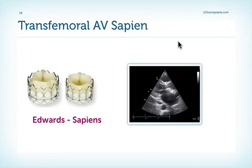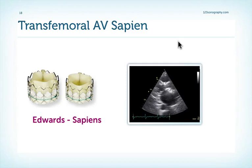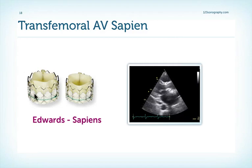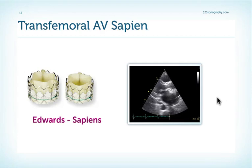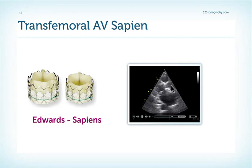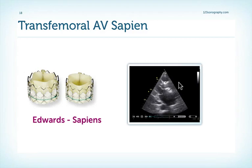The other type of valve currently being implanted via the transfemoral approach is the so-called Edwards Sapiens valve. It looks very similar; the only difference is the stent is not so long, so it looks more like a normal biological valve. We have the stent here in this region. Very often we have fairly echogenic material on the top and the bottom, which is the residual calcified aortic valve, and in between we have the biological tissue.